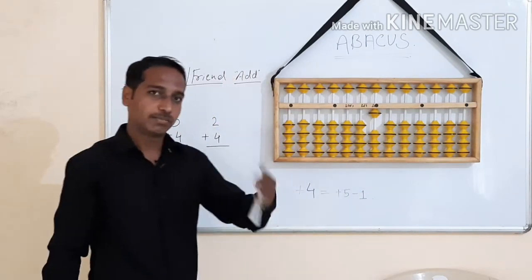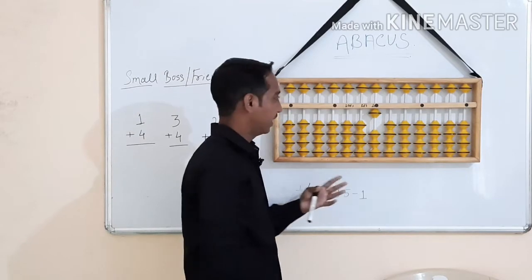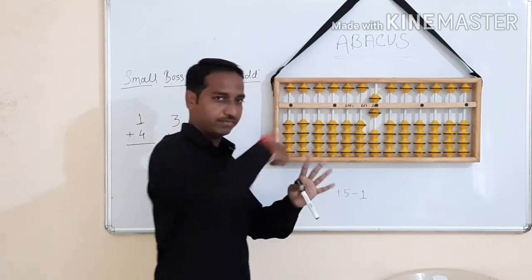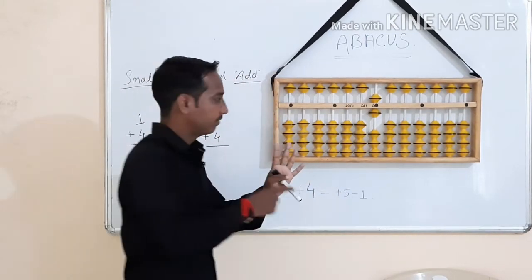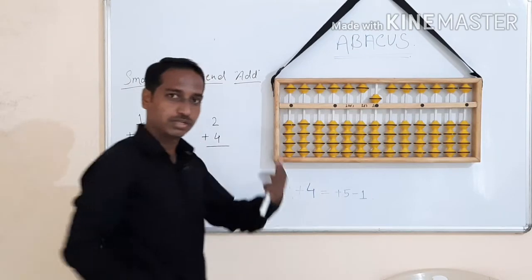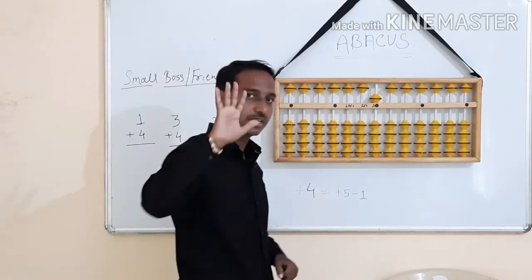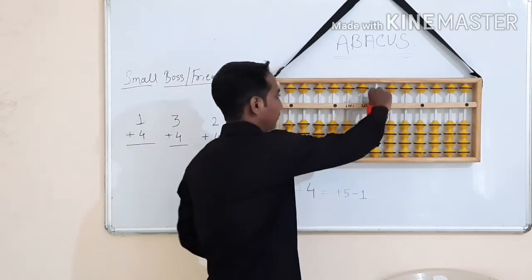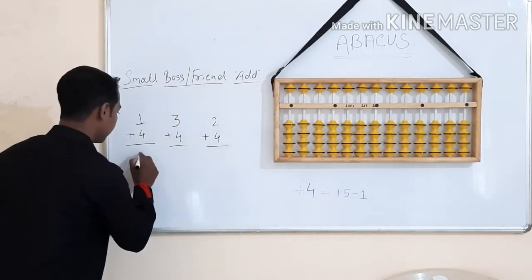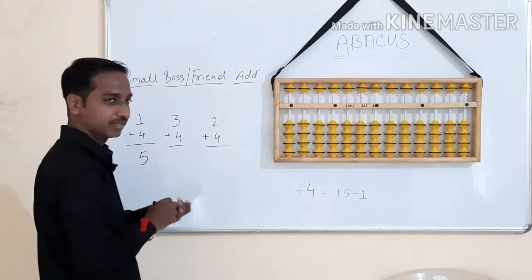Then we use the formula for example: Small Boss Add — Add 4, Add Boss 5, Less Friend 1. So, the answer is 5. Total answer: 5. Second example.